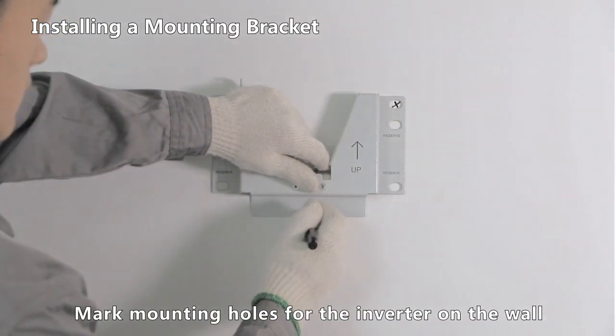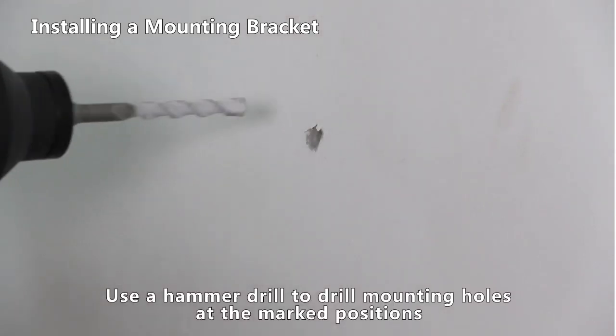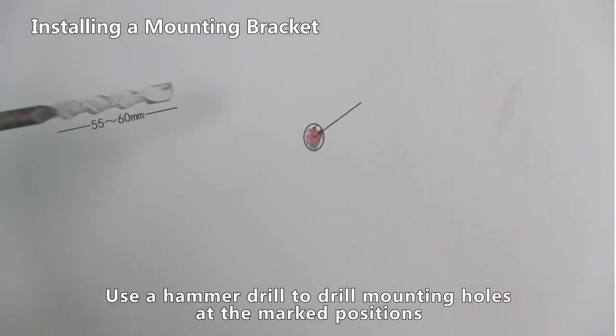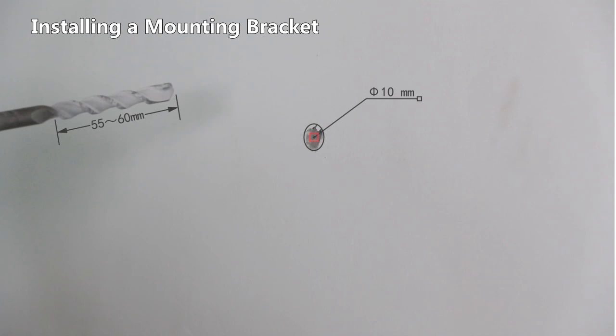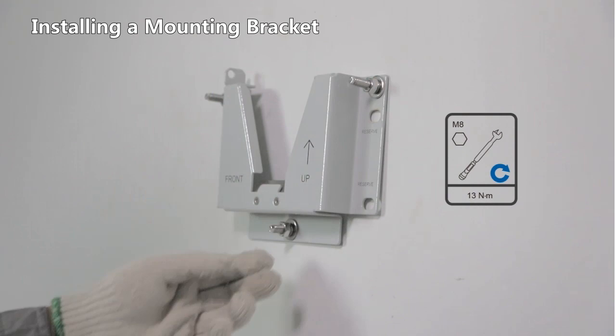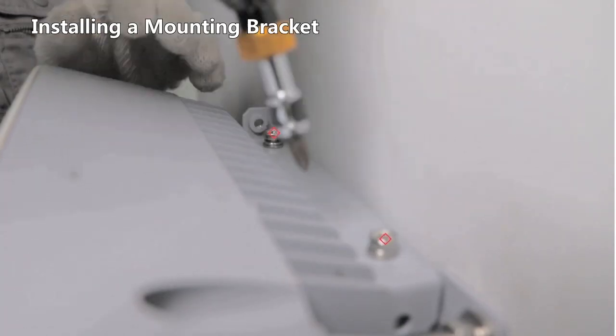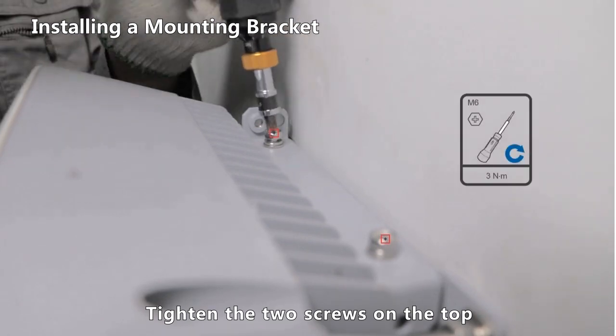Mark mounting holes for the inverter on the wall. Use a hammer drill to drill mounting holes at the marked positions. Install expansion bolts and secure the mounting bracket. Mount the inverter on the mounting bracket. Tighten the two screws on the top.